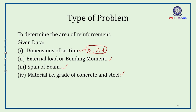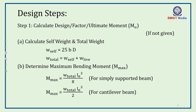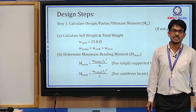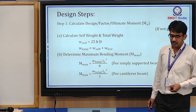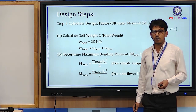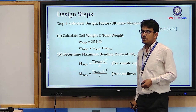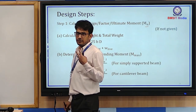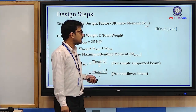The output we have to calculate is the area of reinforcement in the tension zone as well as in the compression zone. Now, the design steps: in Step 1, we calculate the ultimate moment (Mu) — also called the design moment or factored moment. We calculate Mu in two ways depending on what is given.